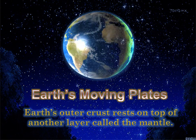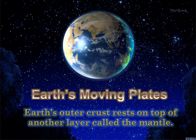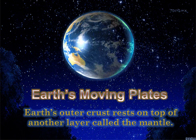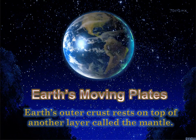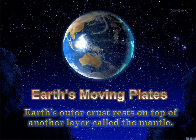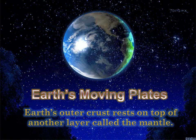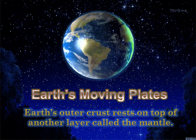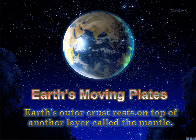Earth's moving plates: earth's outer crust rests on top of another layer called the mantle. The outermost layer is crust, and it rests on the mantle. The crust and the top of the mantle are divided into very large pieces called plates. The plates move all the time, and this movement can cause rapid changes in earth's surface. Volcanoes and earthquakes often occur in bands along or near the place where continental plates and ocean plates come together.